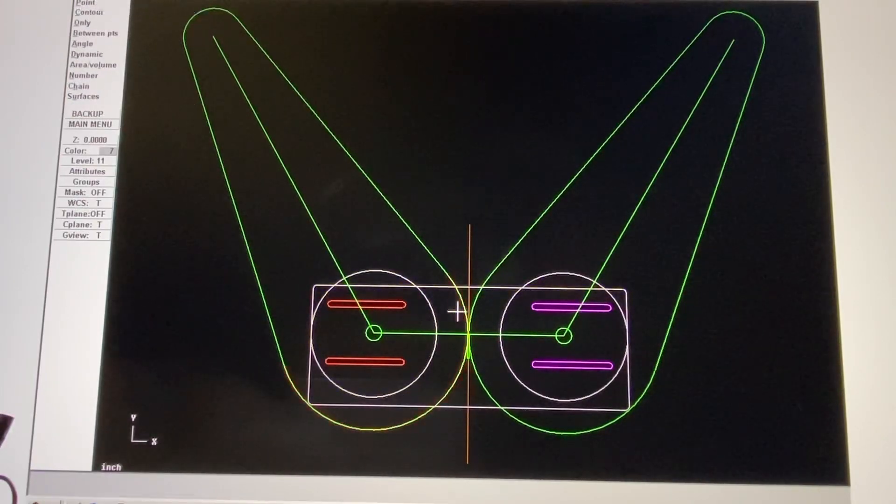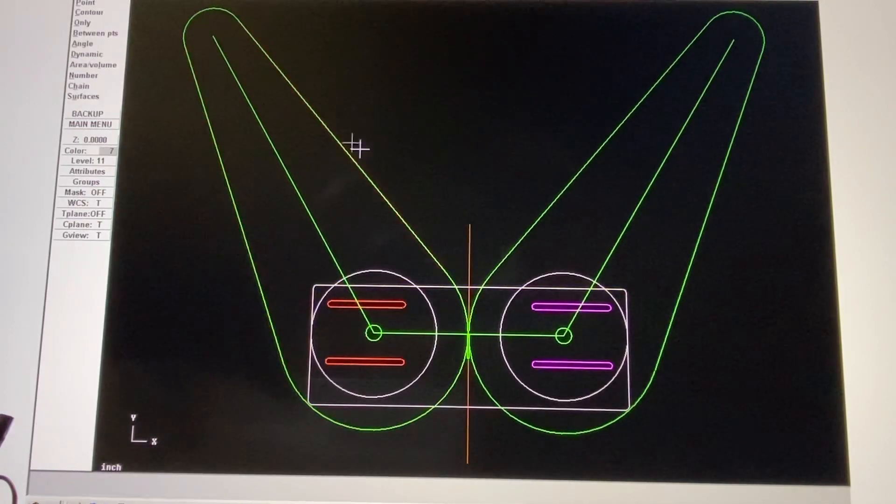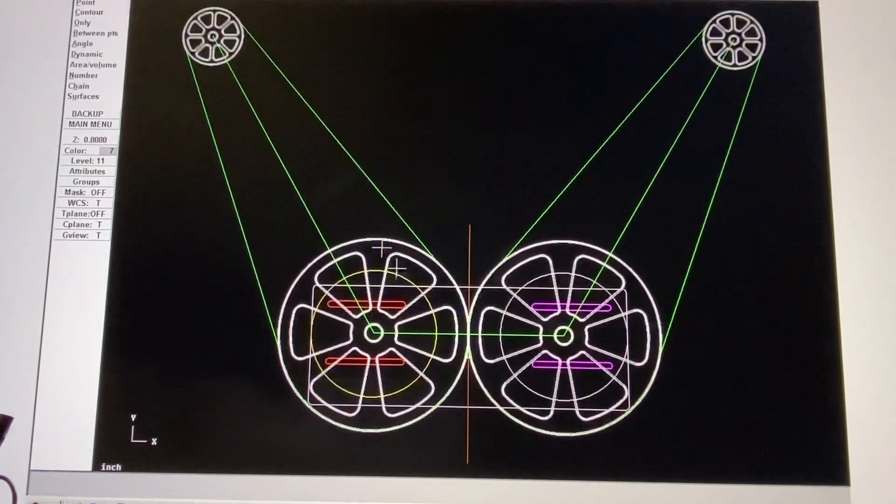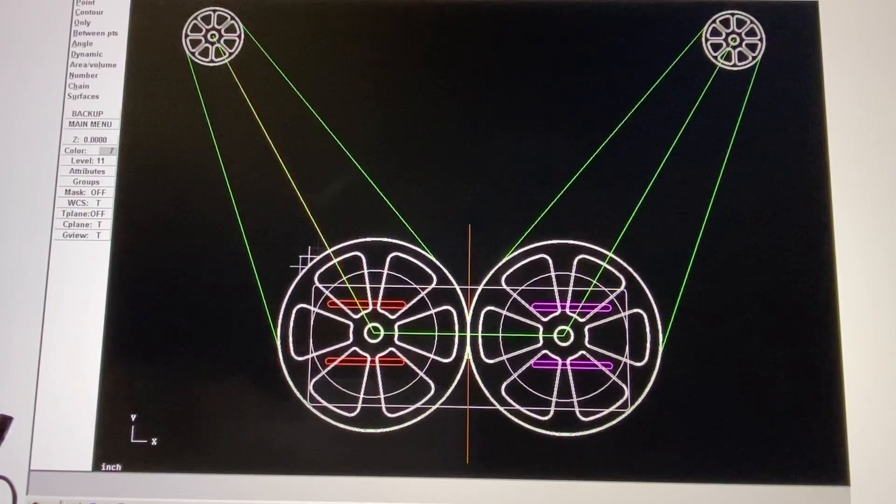If I check the diameter, these wheels are about 12 inches. I'll show you the 3D part of this. Now you can see the wheels I want to make - two 12-inch wheels with the shaft for the motor.